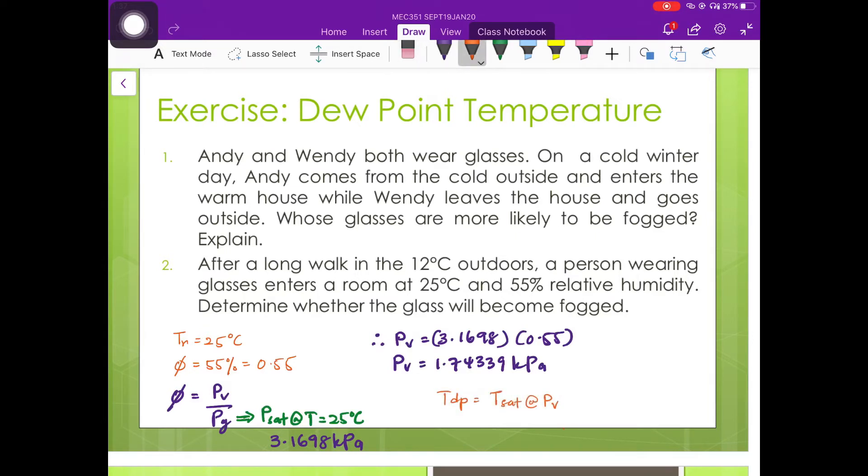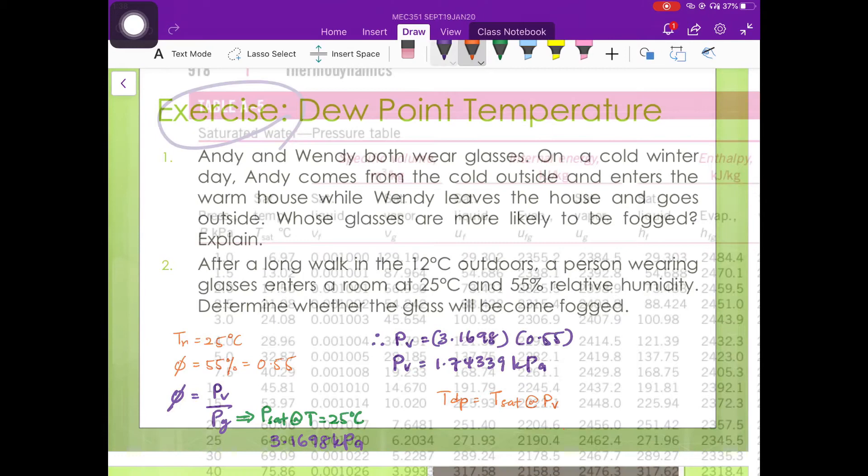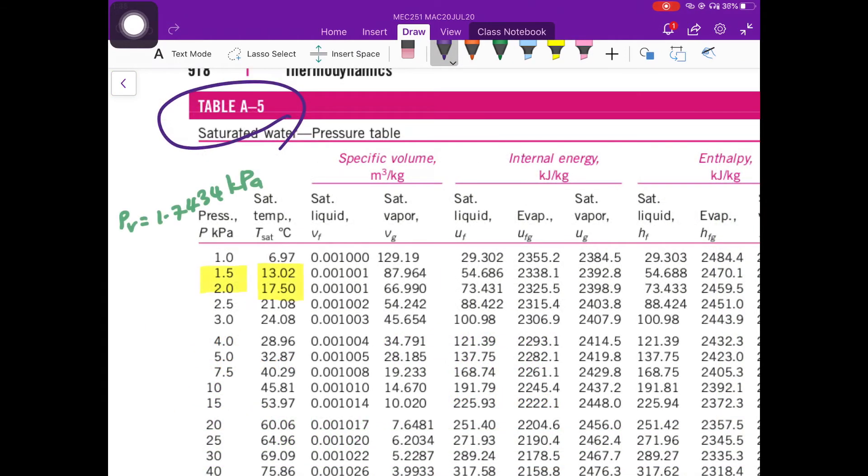And we know that the dew point temperature is equal to the saturation temperature at the partial pressure of the water vapor. From table A-5, the value for Pv equal to 1.7434 kilopascals is in between 1.5 kilopascals and 2 kilopascals. So the saturation temperature value will be also in between 13.02 and 17.5.